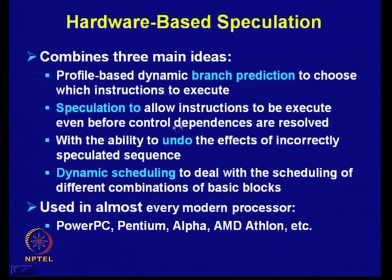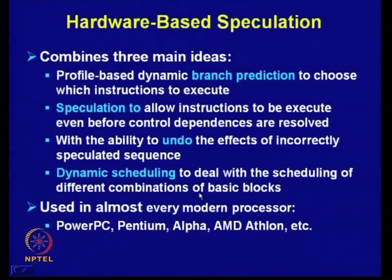The third idea is the ability to undo the effects of an incorrectly speculated sequence. Previously, execution meant writing results to memory or registers — a permanent, irrevocable change that cannot be undone. That must somehow be prevented. The third idea is dynamic scheduling to deal with scheduling of different combinations of basic blocks, combining branch prediction and speculation with dynamic scheduling.